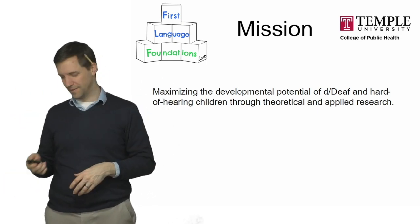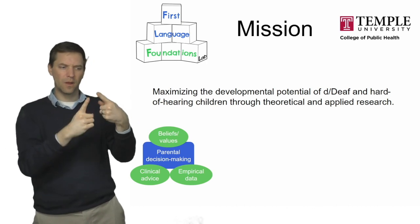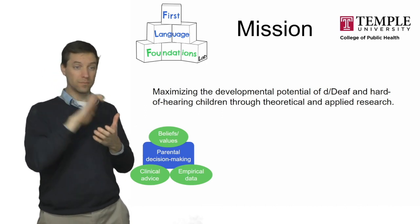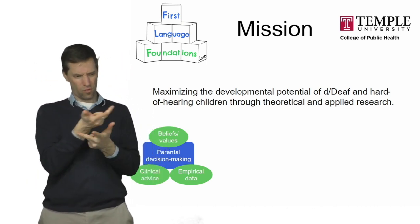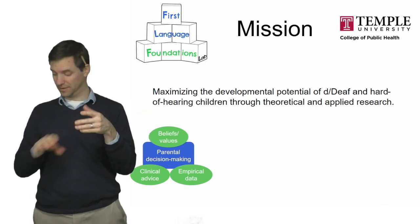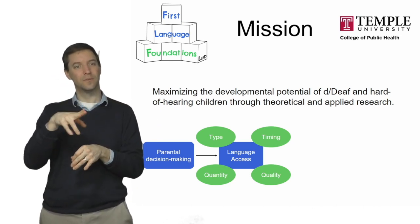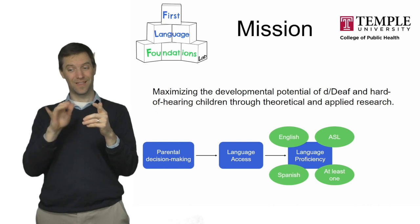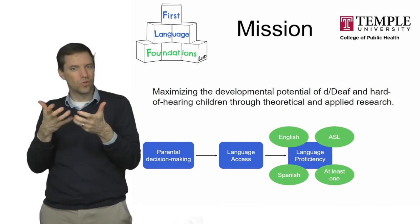That's a pretty broad scope. For example, we study how parents — particularly hearing parents — make decisions about how to raise and support their deaf or hard-of-hearing child, and as part of that process, how they integrate their own beliefs and values, the advice they might get from clinicians, and research from empirical work, to make a fully informed decision. We also study how those decisions lead to different kinds of language input being available in the child's environment, and how that input leads to language acquisition in whatever languages the child is attempting to acquire.